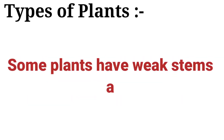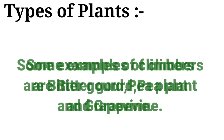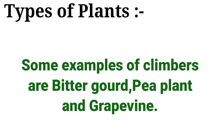Some plants have weak stems and need support to stand. They are called climbers. Some examples of climbers are bitter gourd, pea plant, and grape vine.